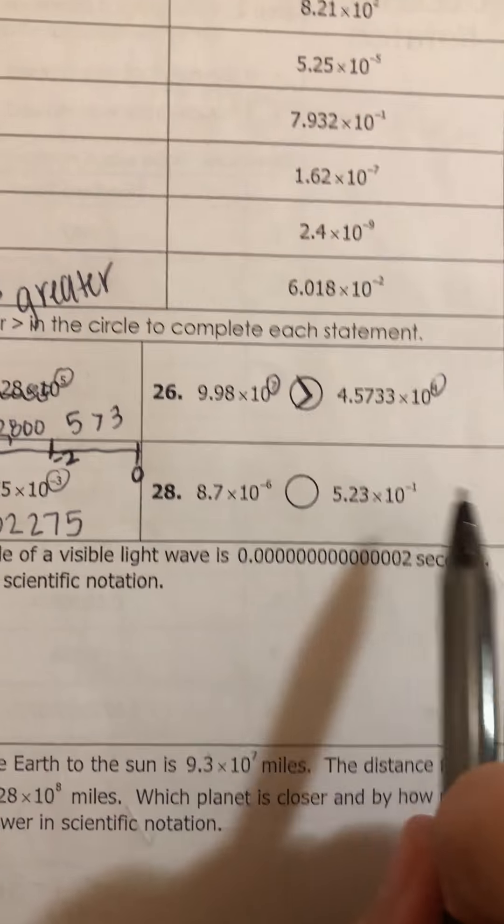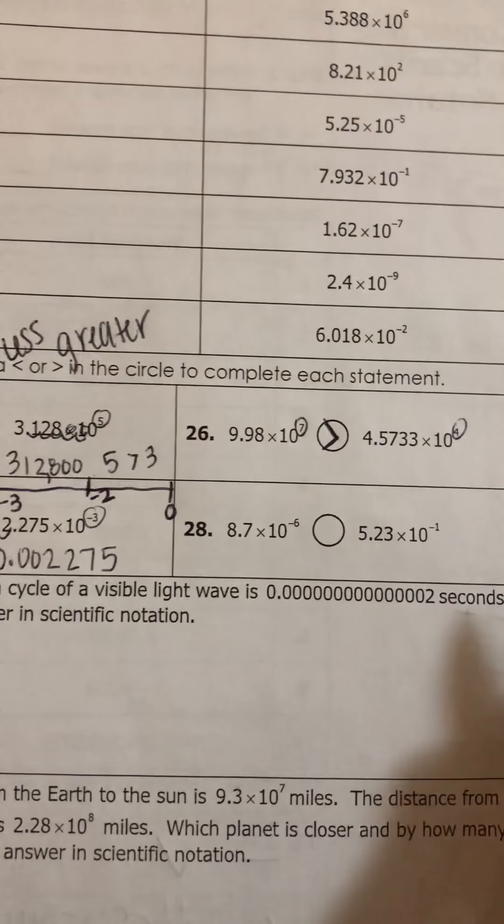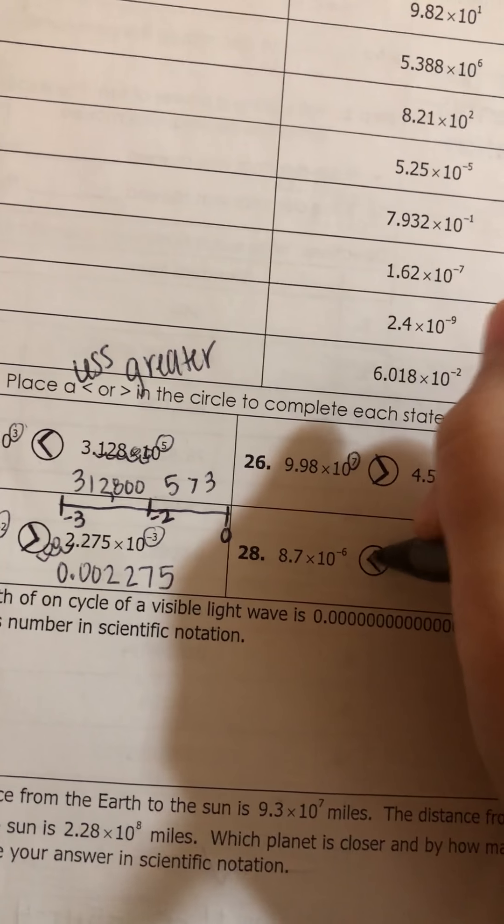This one, if you remember the number line strategy, negative 1 is way more positive. It's way more to the right on the number line than negative 6. So this one is actually less than.